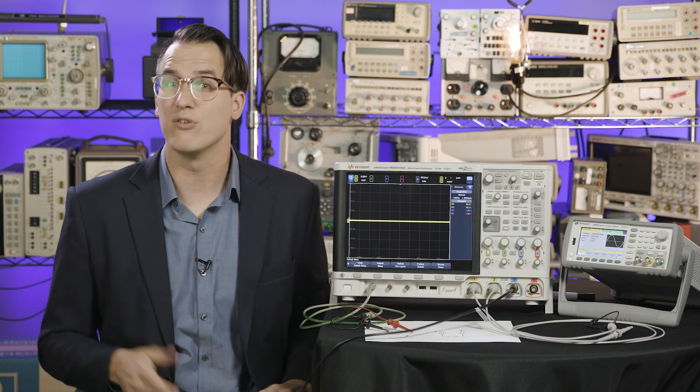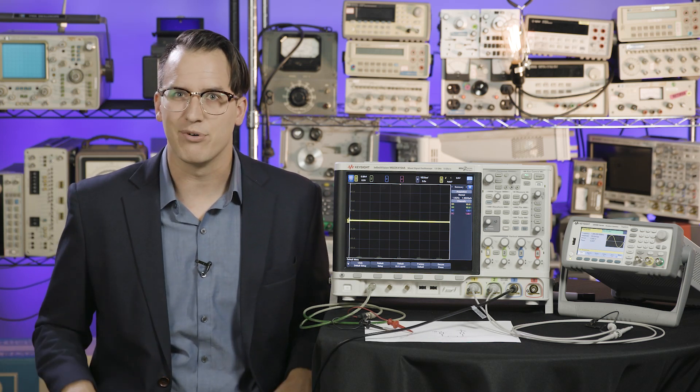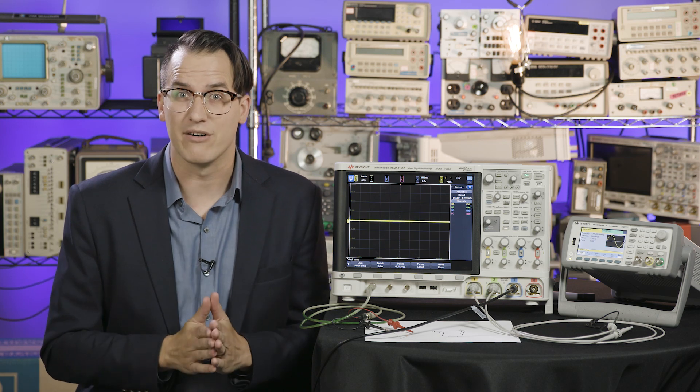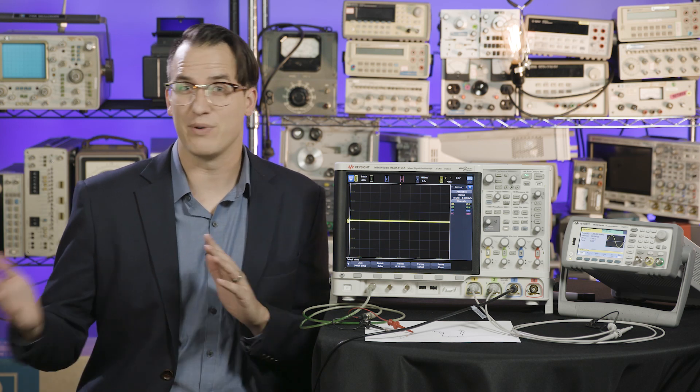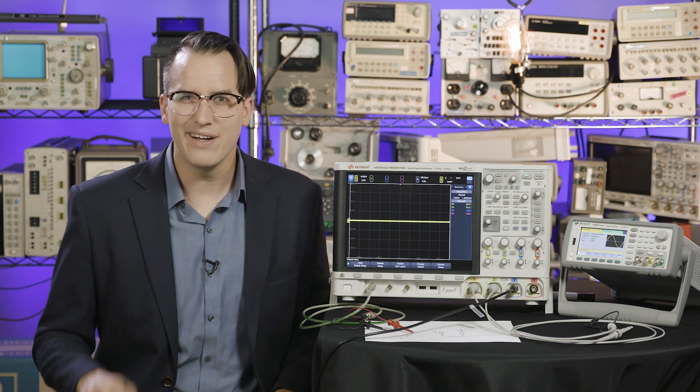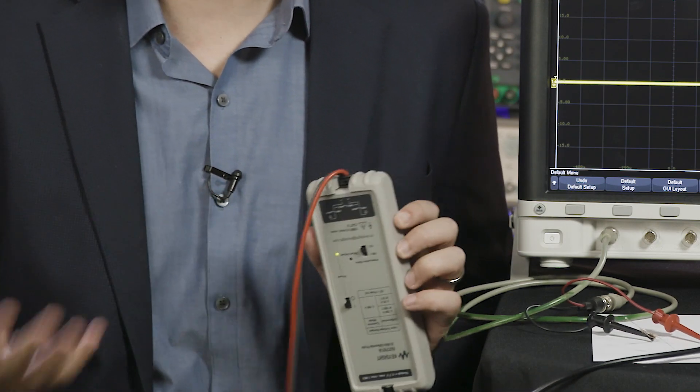Like a single-ended probe, a differential probe measures the difference between two points. Unlike a single-ended probe, a differential probe doesn't have a ground clip. You can measure the voltage difference between any two points. With a single-ended probe, the oscilloscope will find the voltage difference, but for a differential probe, there's a differential amplifier inside of the probe itself.